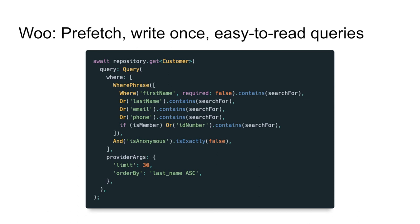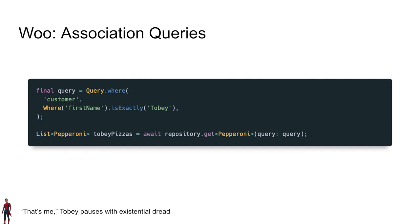One of the things we wanted to do with BRIC is make sure that it reads left to right very simply — that makes for very maintainable and legible code, making it easy for another member of your team to pick up. Another great feature of BRIC is that you can query association data. We can look up a customer's first name when querying a pizza model — we don't need to do complex joining, we can just say I want to look up this field and this nested property on this field. It reads very clearly where the customer's first name is exactly Toby, and then we get all the pizzas that Toby has ever purchased.